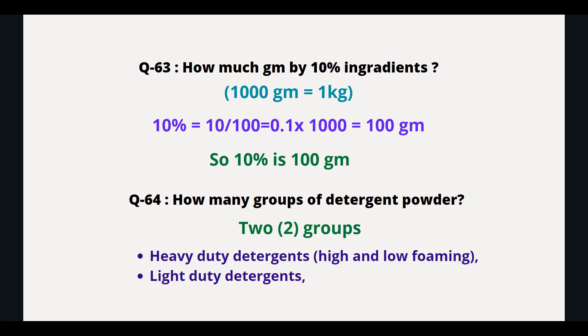How many groups of detergent powder are there? Two groups: heavy-duty detergent, which includes high and low foaming, and light-duty detergent.